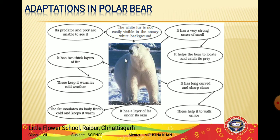Polar bears have short ears and a short tail. This prevents the loss of body heat through these parts. The more surface area a body has, the more heat escapes. By having short ears and a short tail, the surface area is reduced, so body heat is retained and they stay warm.